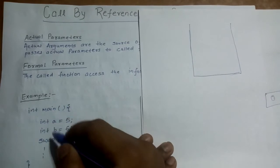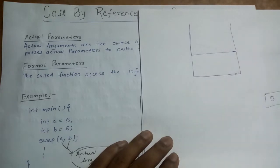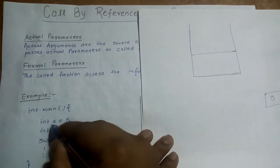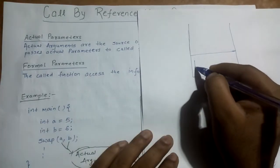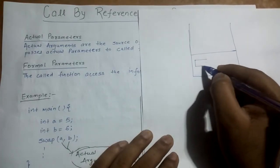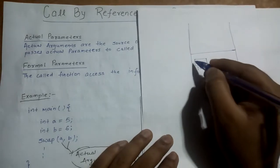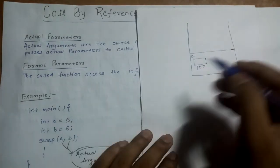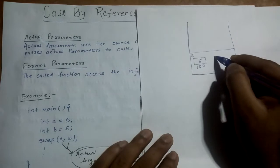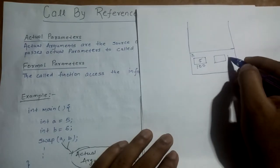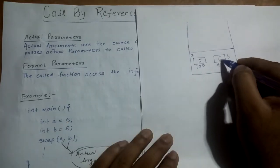Let's start the execution of this program using the stack. First, we arrive at the main function, so the main function will have its own local block in the stack. Inside it, we have two variables. Variable A of type integer will be allocated a space — let's say the address of A is 100 — and the value stored in A is 5. And we have another variable B — let's say it is allocated address 400 — and the value stored in B is 6.